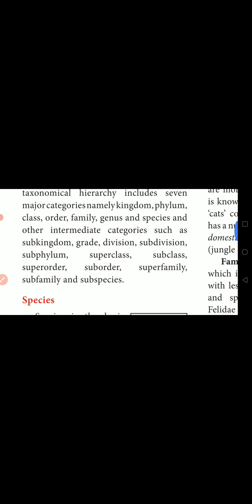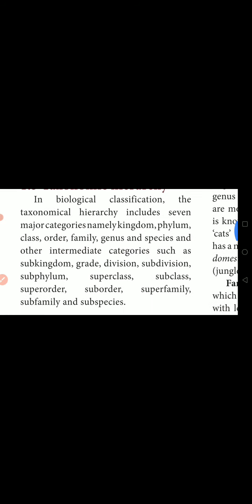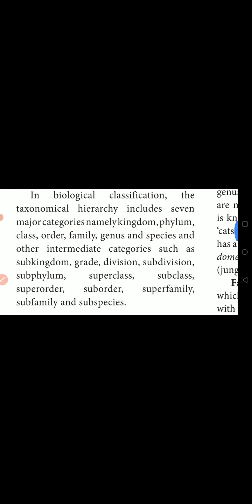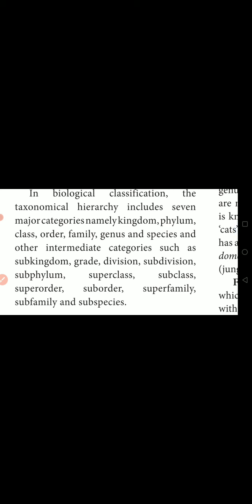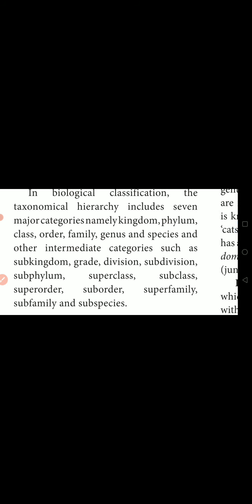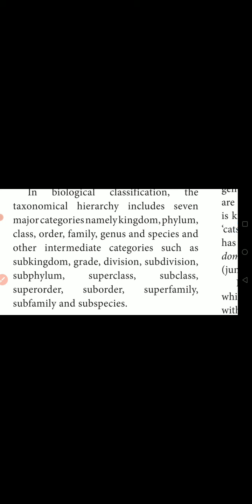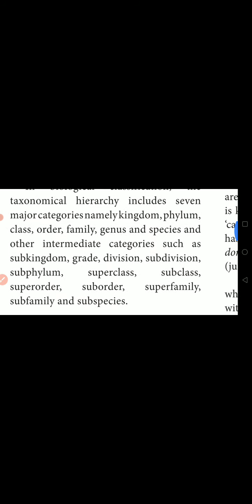The seven major categories are Kingdom, Phylum, Class, Order, Family, Genus, and Species. Whatever characters the species have, those animals come under Genus. Whatever characters the genus animals have, they come under Family. Whatever characters the family has, they come under Order. Whatever characters the order has, they come under Class. Whatever characters the class has, those animals come under Phylum. Whatever characters the phylum has, all those animals come under Kingdom. In this way, the classification of animals is done.